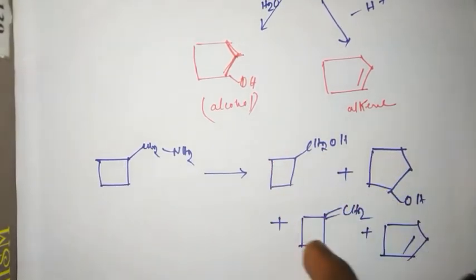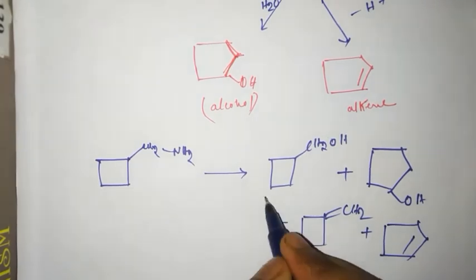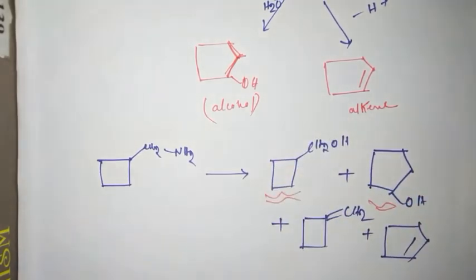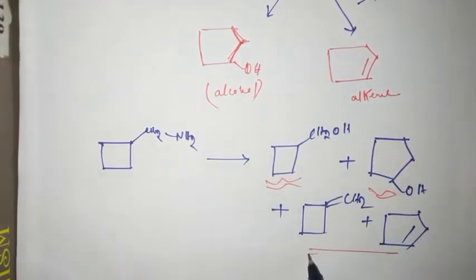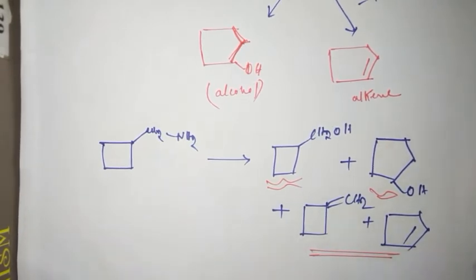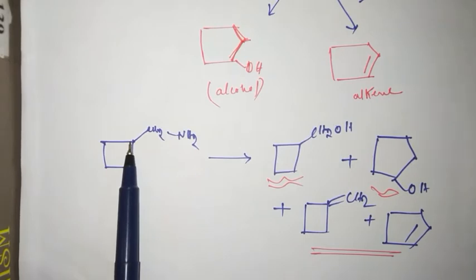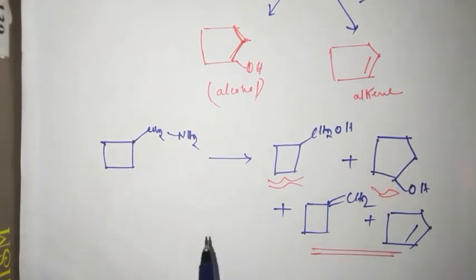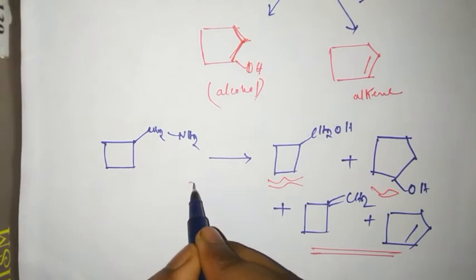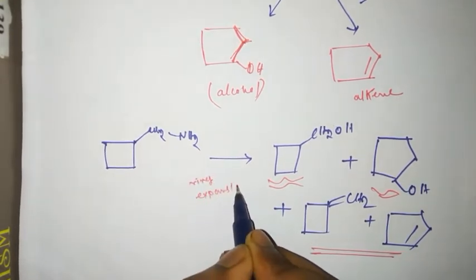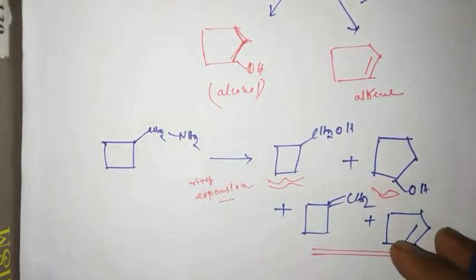Four different products are formed. Here, these two products are major products and these two products are side products. Here we can see that the 4-member ring is converted to 5-member ring, that is ring expansion.